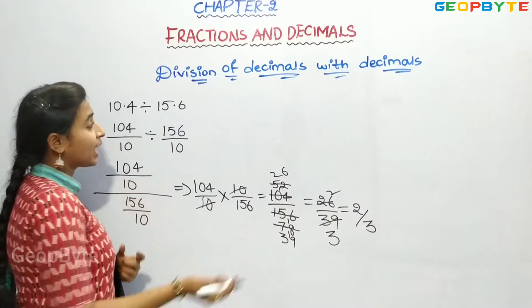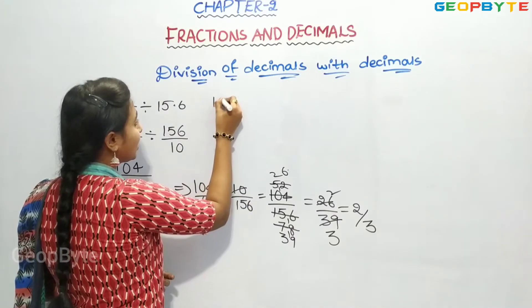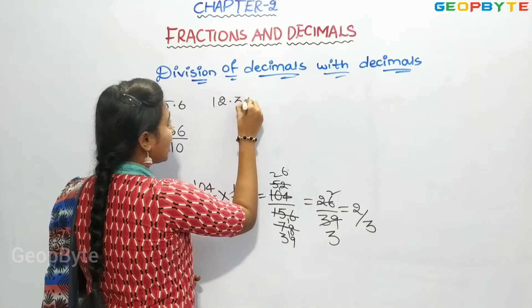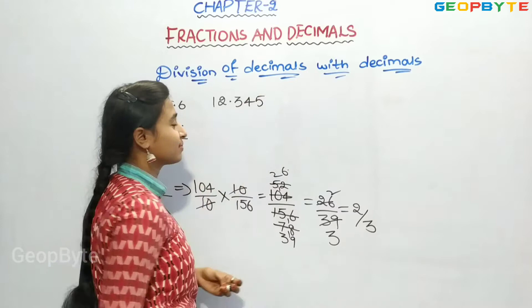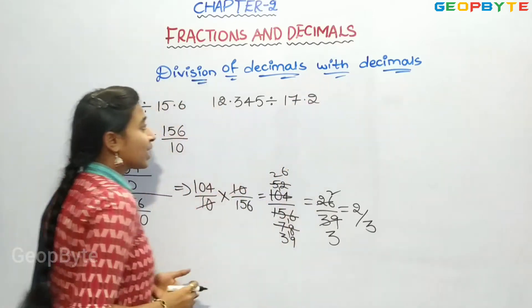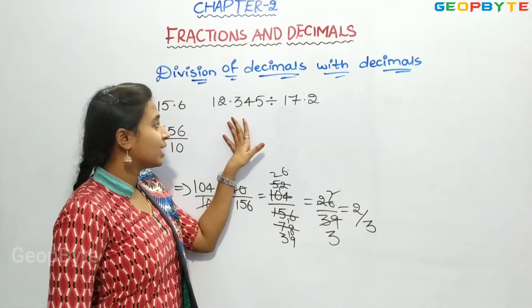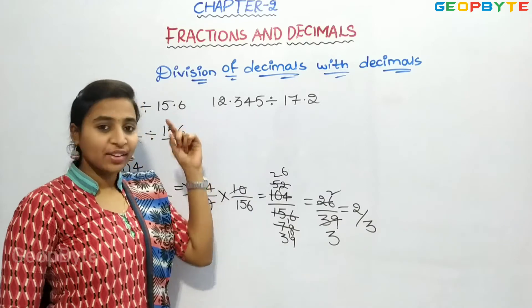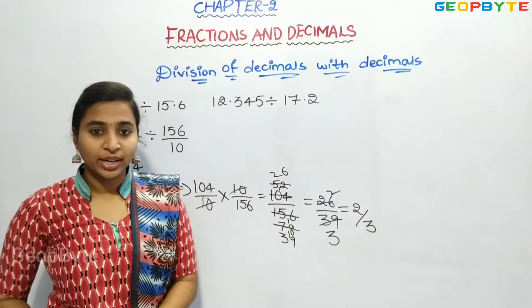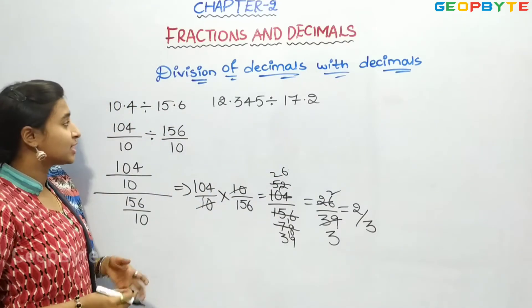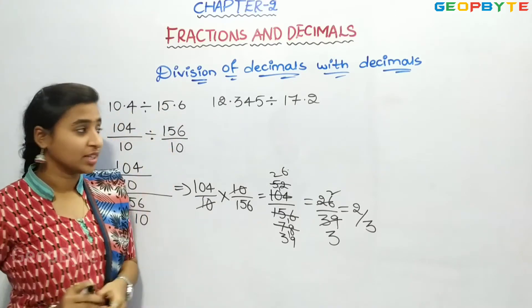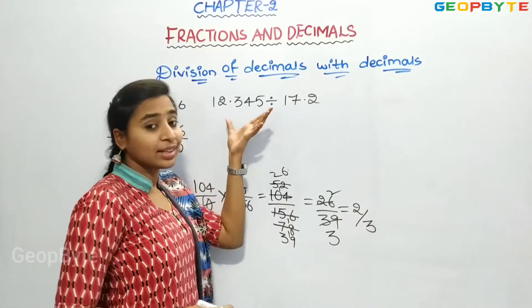Now let us take a few more numbers — 12.345 divided by 17.2. If you observe here, I have taken 3 digits after the point in 12.345, and only 1 digit after the point in 17.2. We have solved a similar problem before with 1 digit after the point on both sides. Now we will solve with different decimal places.